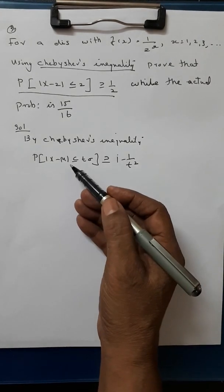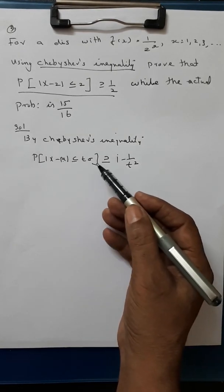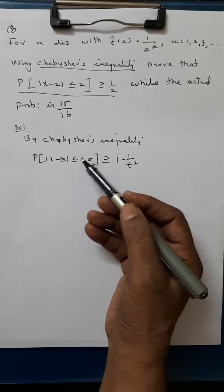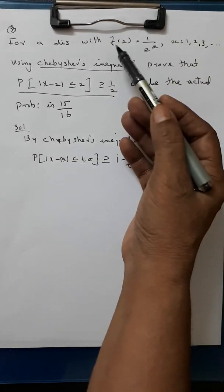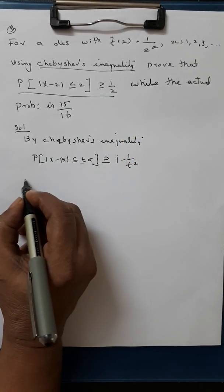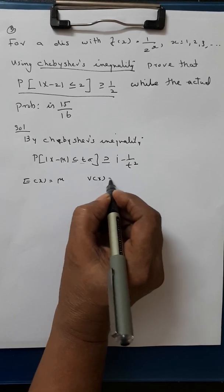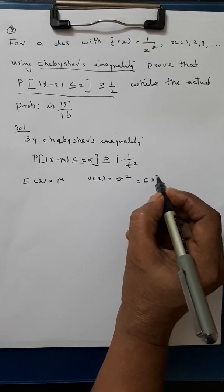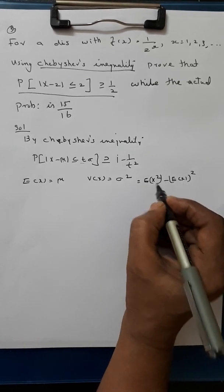For applying this Chebyshev's inequality, we want to note the values of mu, sigma, and t. To find mu and sigma, we have the probability density function f(x) equal to 1/2 raised to x. We know that E(x) equals mu and V(x) equals sigma squared, which is again equal to E(x squared) minus E(x) whole square.